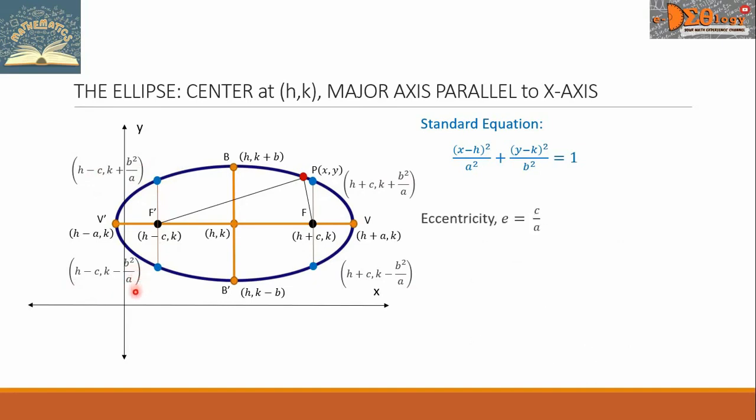The eccentricity, denoted by E, equals C over A.